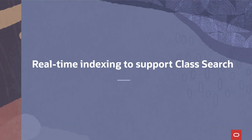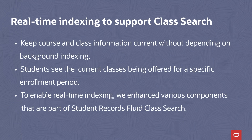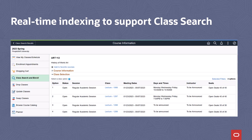The goal of this PUM 28 update was to improve your students' experience using Fluid Class Search. Real-time indexing enables the campus to add or delete class sections and new courses without requiring the registrar to run several index processes in the background. This enables students to search for classes or courses which are up to date, ensuring they're seeing the current classes being offered for a specific enrollment period. To enable real-time indexing, we enhanced various components that are part of Student Records Fluid Class Search.